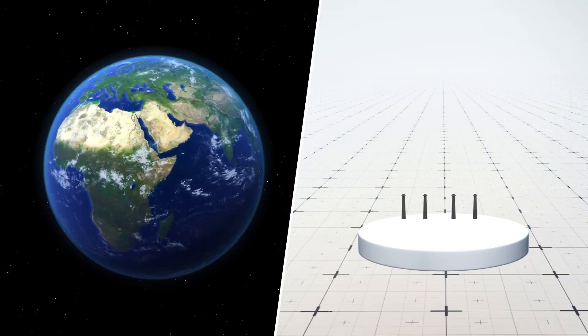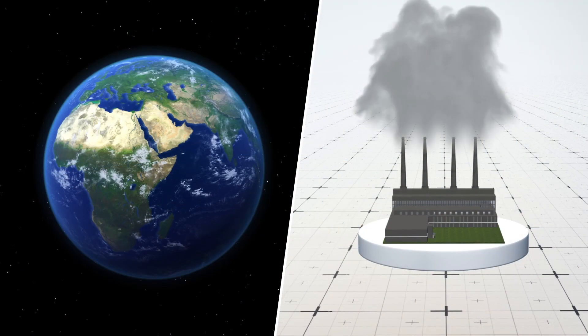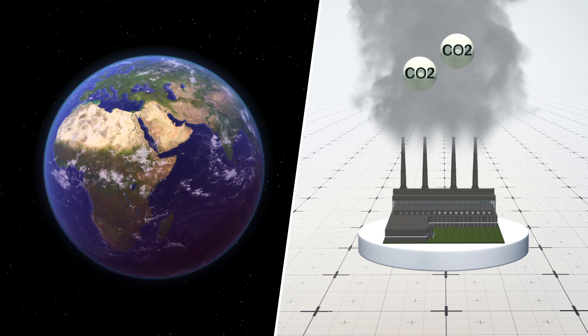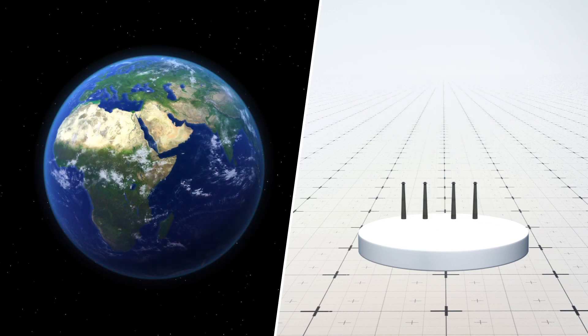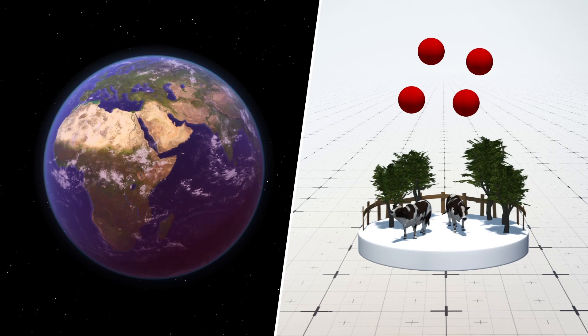Global warming refers to the gradual increase of the Earth's average temperature. The sudden rise in temperature in recent years is primarily attributed to the increasing presence of greenhouse gases caused by human activity. These gases include carbon dioxide, methane, nitrous oxide, and ozone.